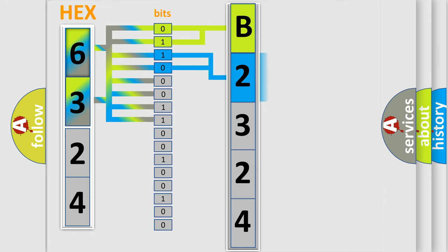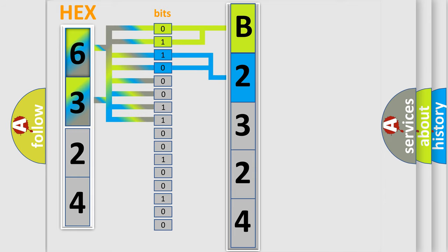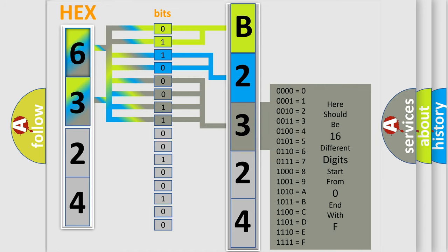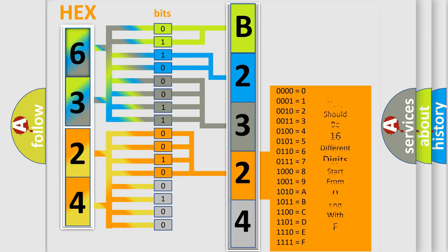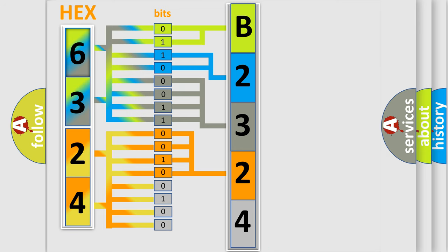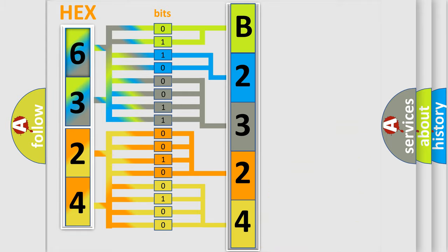The next two bits determine the second character. The last bits of the first byte define the third character of the code. The second byte is composed of a combination of eight bits. The first four bits determine the fourth character of the code, and the combination of the last four bits defines the fifth character. A single byte conceals 256 possible combinations.